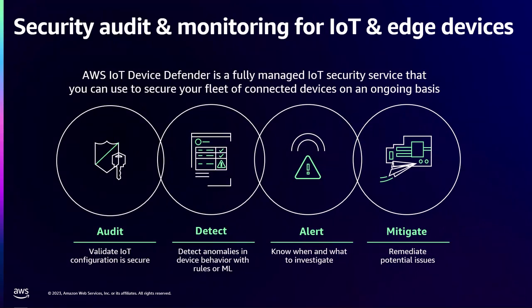Let's deep dive into IoT devices and edge devices. In order to monitor your IoT devices as well as edge appliances, AWS offers AWS IoT Device Defender — a service that can be used to audit and monitor your connected devices. You can get alerts and you can take mitigation actions.